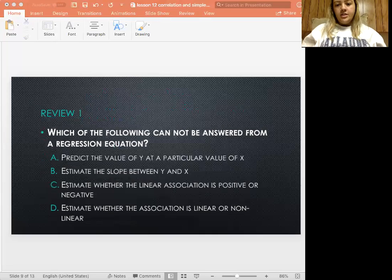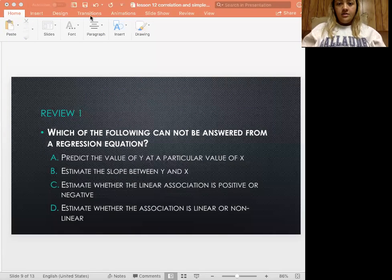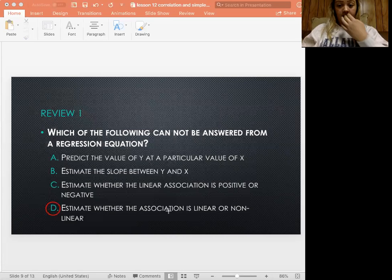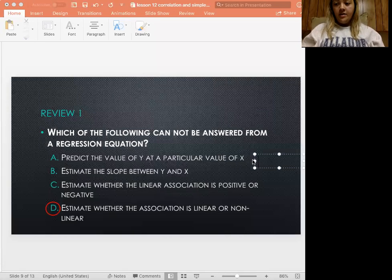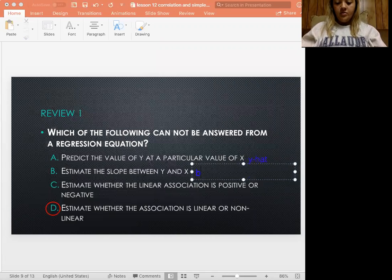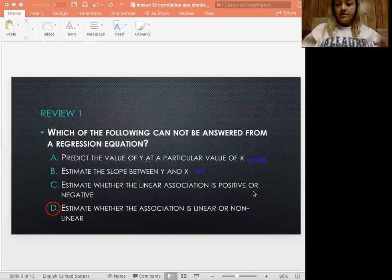All right, so let's try this question. So which of the following cannot be answered from a regression equation? So go ahead and read through these. Let me know what you think it is. Okay, and then our answer here is going to be D. So we can't figure out if it's linear or nonlinear unless we actually plotted it and went through all of that and also found out more about the population. But the rest of these, you can figure this out. So predicting the value of y to predict the value of x, that's our y-hat, remember? And then the slope between x and y, that's our b subscript 1. And then estimate whether it's positive or negative, that's just going to be if it's a positive b subscript 1 or a negative. So D is the only one that we can't do.